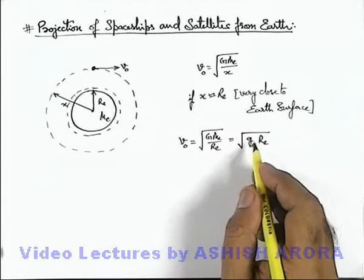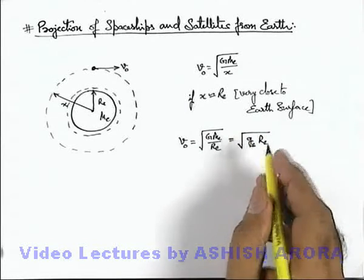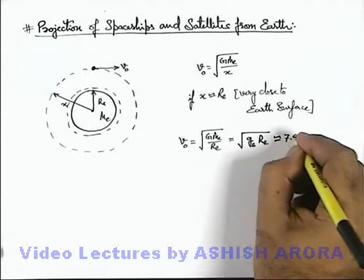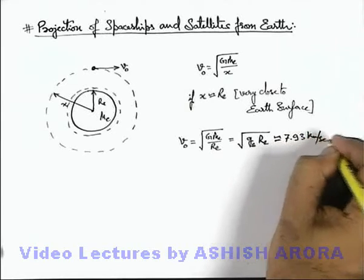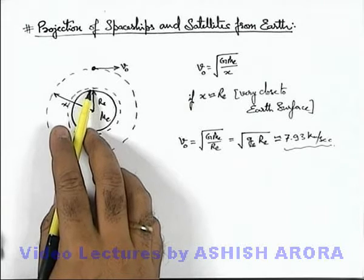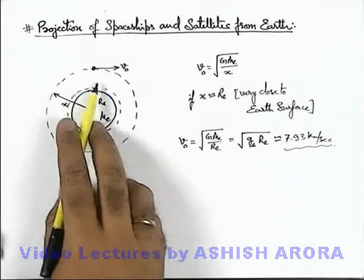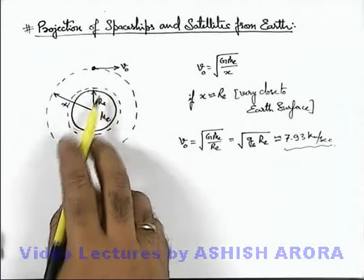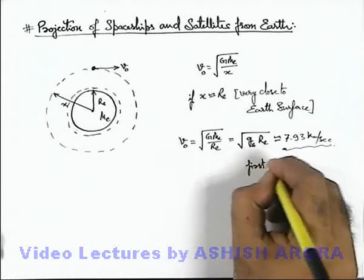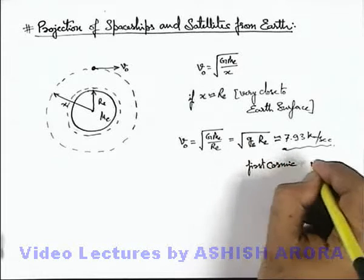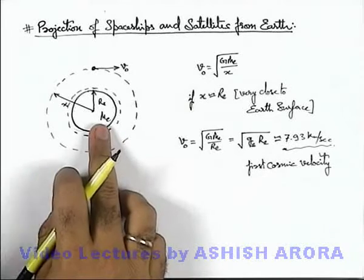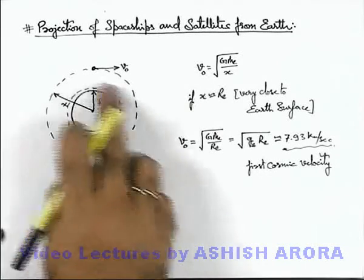If we substitute the values of gravity at Earth's surface and the radius of Earth, this comes out to approximately 7.93 kilometers per second. This is the speed with which, when a body is projected just above Earth's surface in a tangential direction, it will orbit as a satellite. This velocity is also termed the first cosmic velocity.